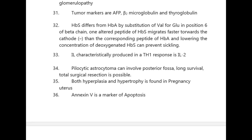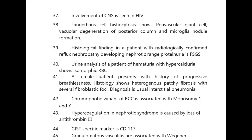Both hyperplasia and hypertrophy are found in the pregnant uterus. Annexin-5 is a marker of apoptosis. Involvement of CNS is seen in HIV. Langerhans cell histiocytosis shows perivascular infiltration, vacuolar degeneration of the posterior column, and microglia nodule formation.